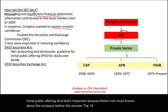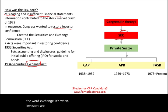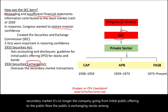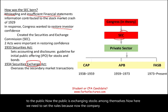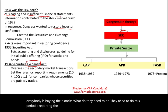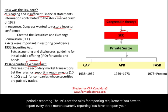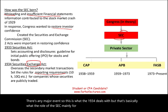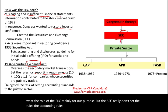The 1934 Securities Exchange Act — notice the word 'exchange' — covers when investors are buying and selling stocks in the secondary market. Now the public is exchanging stocks among themselves. The 1934 Act sets the rules for reporting requirements: quarterly reporting every three months, annual financial statements, and disclosure of any major events. However, the SEC really doesn't set the detailed accounting rules — it delegates that process to the private sector.